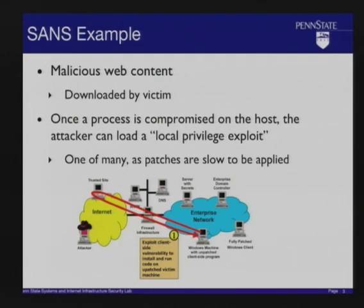Once the attacker can compromise these processes, they can launch what SANS refers to as a local exploit. There are a lot of different ways the attacker can knock over your system once they get hold of even an unprivileged process. They can use local exploits to compromise other root processes on your system, get control of your system, and then start to do some more malicious things.